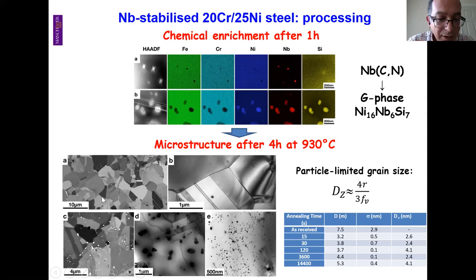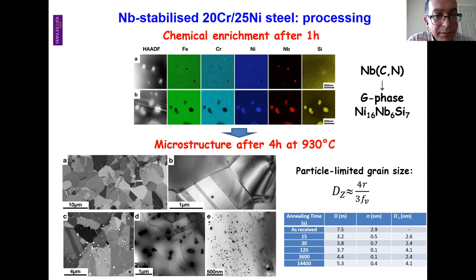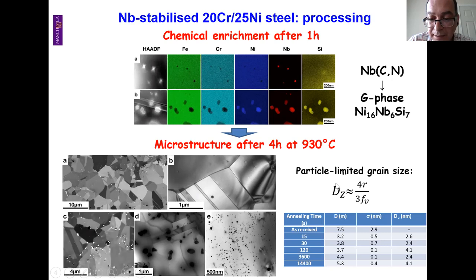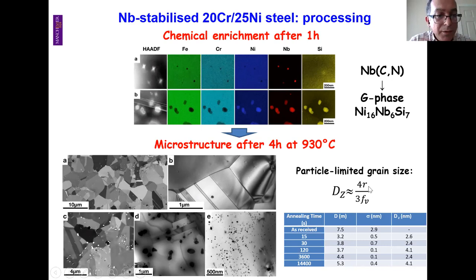After processing, we have a fine microstructure with annealing twins and a fine distribution of second-phase particles. Those particles likely stop grain boundary migration — and there is a simple model called the Zener pinning model that predicts the matrix grain size given the presence of second-phase particles. Using this equation, we can estimate the grain size based on the average particle size and volume fraction of those particles. The experimentally measured grain size is very close to the predicted value, confirming that these particles effectively pin the grain boundaries and limit grain size.